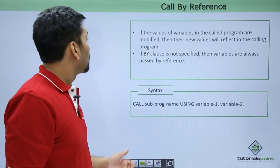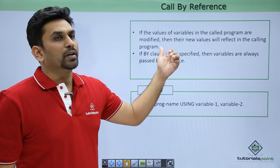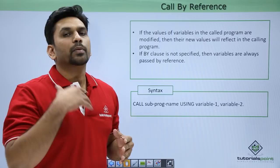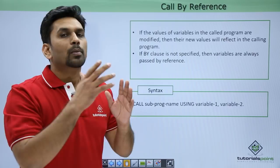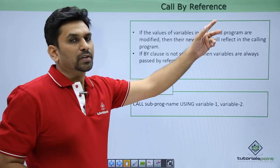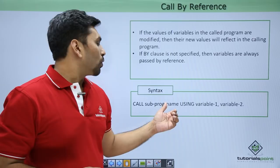Call by reference means if the values of variables in the called program are modified, their new values will reflect in the calling program. Suppose we are passing two variables and in module 2 the values have been modified — when control comes back, the modified values will be reflected in module 1. Call by reference is the default option. The syntax is: CALL [module2-name] USING variable1 variable2.